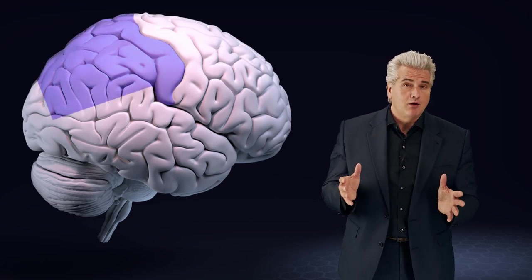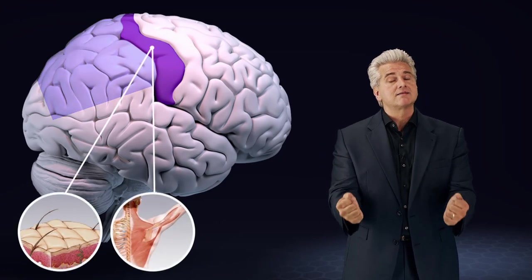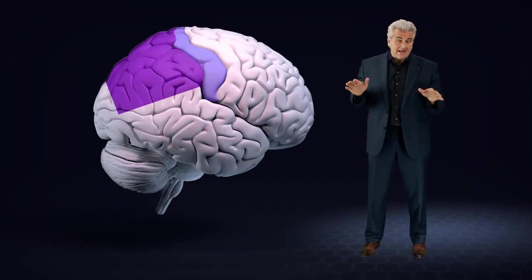The parietal lobe receives somatic sensory impulses from the skin, the muscles and the joints, and integrates sensory information of different modalities.